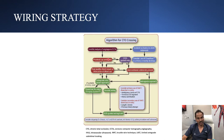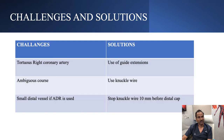Looking at wiring strategy: there is a good proximal cap, so we can start antegrade wire escalation. But the problem is the course is ambiguous. When course is ambiguous, we can use a knuckle wire to navigate the course, or we can also use a retrograde wire as a marker to navigate the antegrade wire if needed.